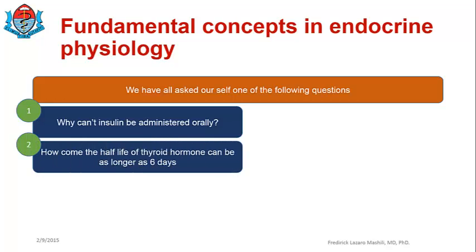Number two: how come the half-life of thyroid hormone can be as long as six days, while that of norepinephrine can only be a few seconds? What is the reason?